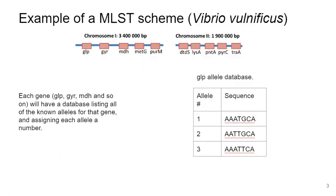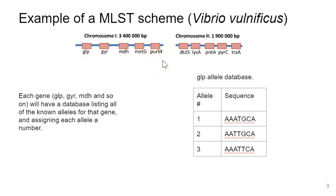Here is an example of an MLST scheme for the pathogenic bacterium Vibrio vulnificus. For each different kind of bacterium, you would have a specific MLST scheme. In the case of Vibrio vulnificus, this bacterium has two chromosomes — chromosome 1 and chromosome 2. The person who established this typing scheme, Niall Bisharat and colleagues, chose five housekeeping genes from chromosome 1 and five from chromosome 2. Most MLST schemes rely not on the complete gene sequence, but just on a partial gene sequence.